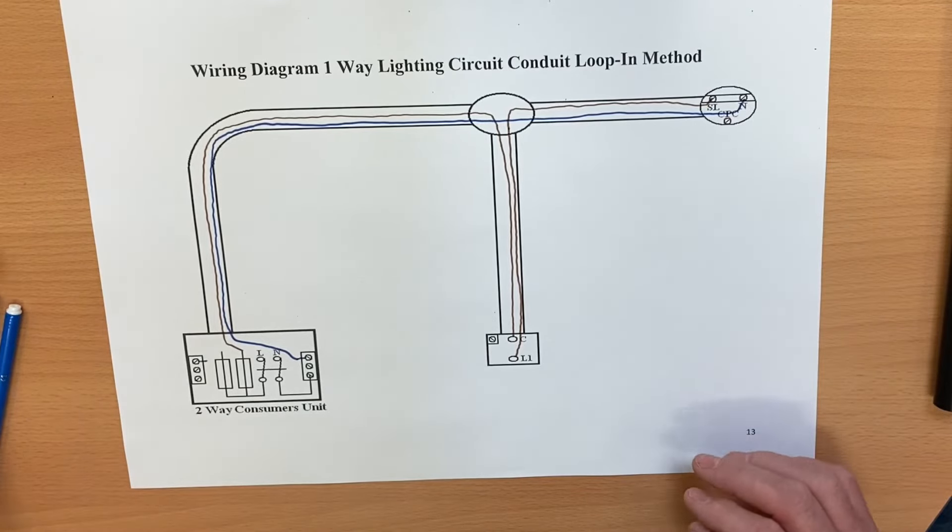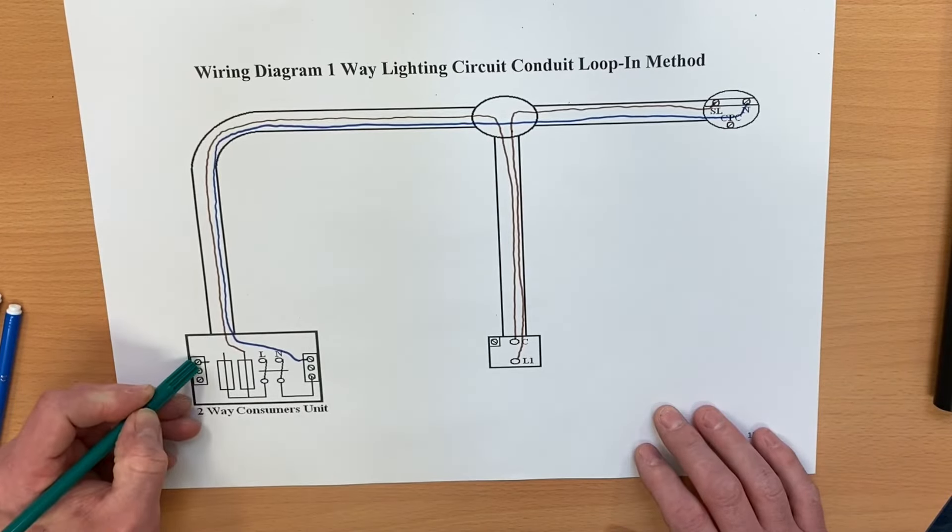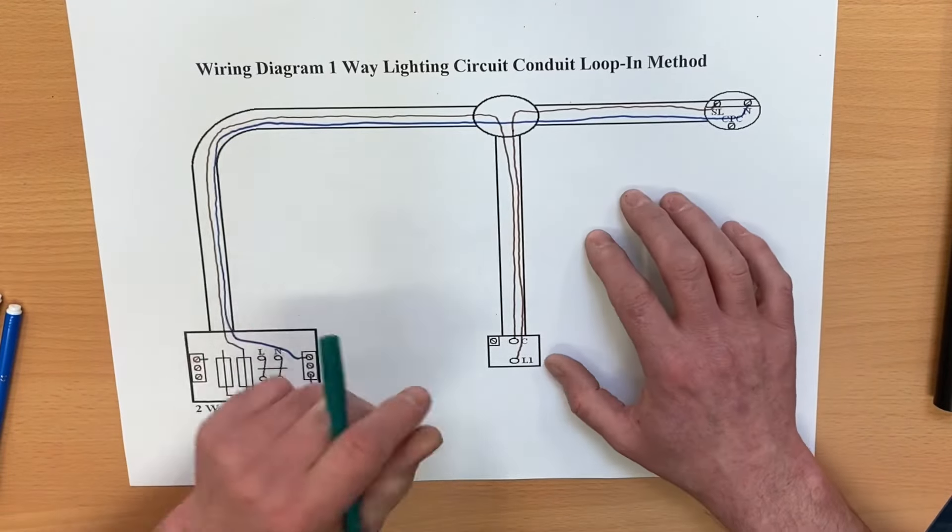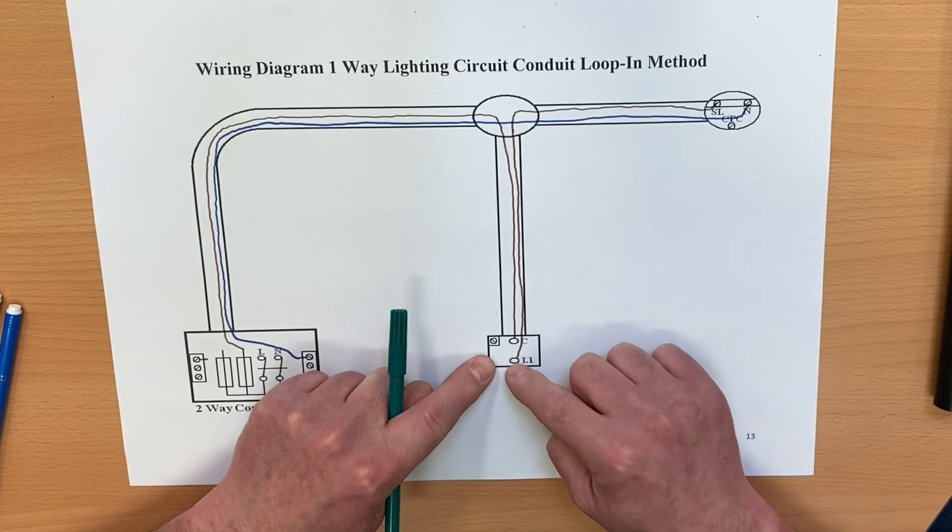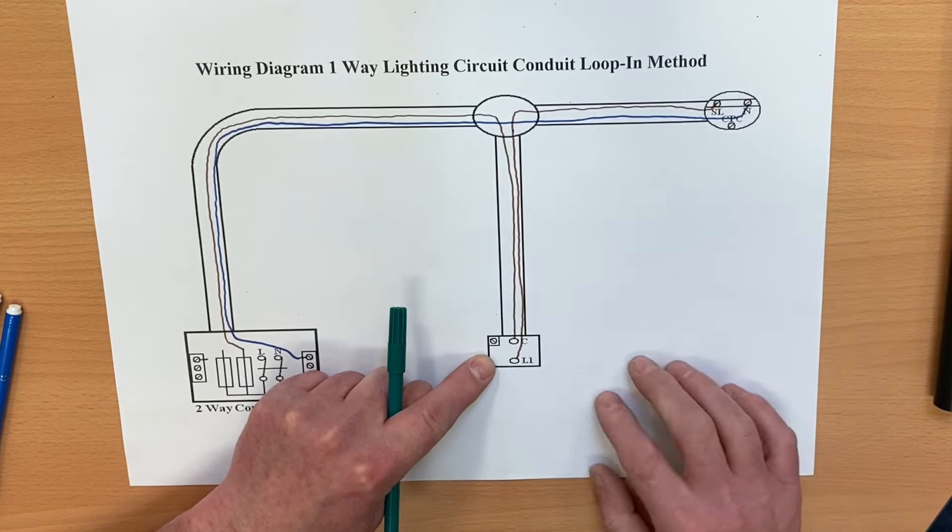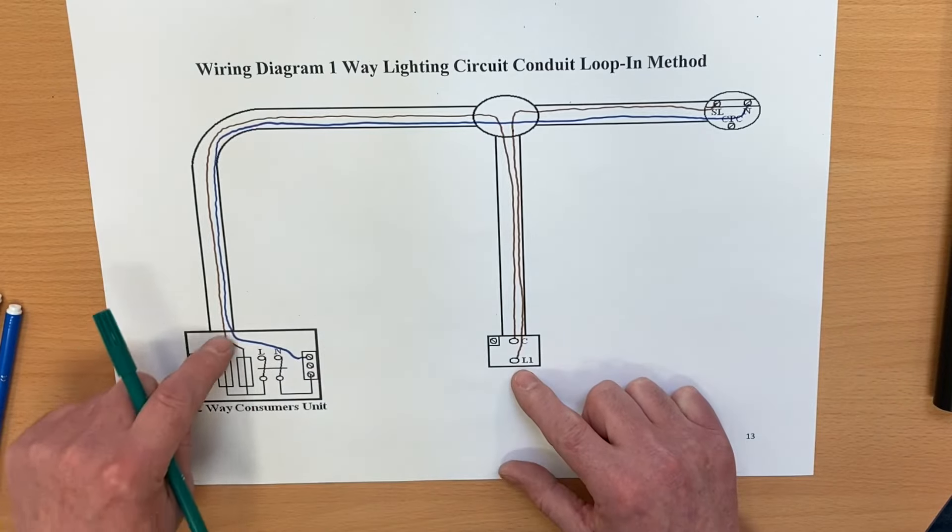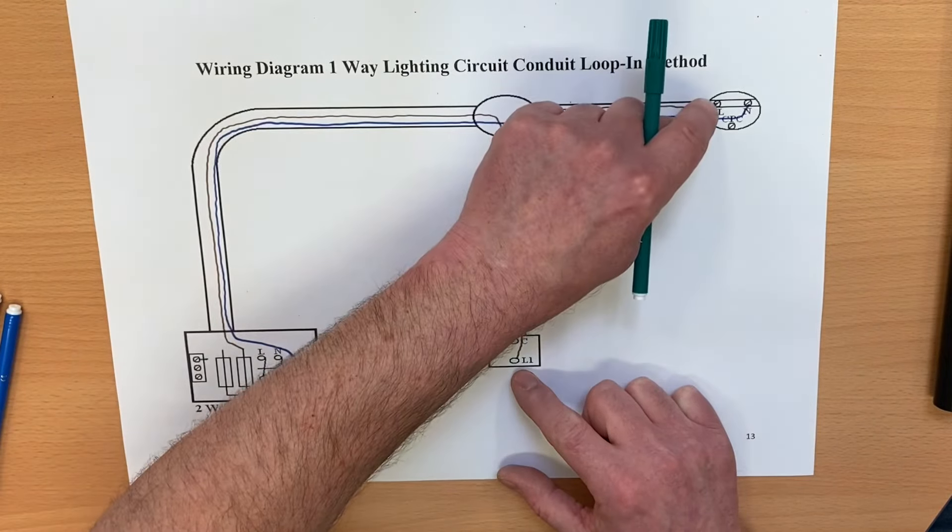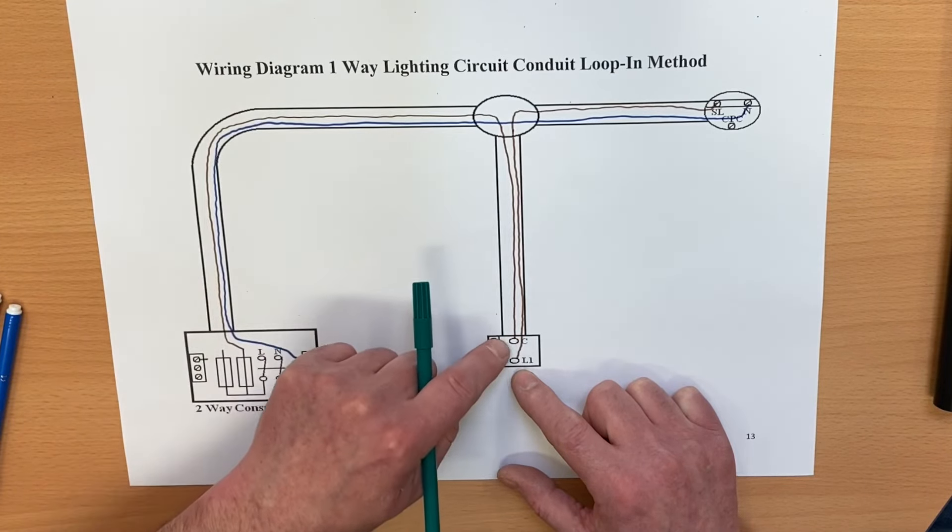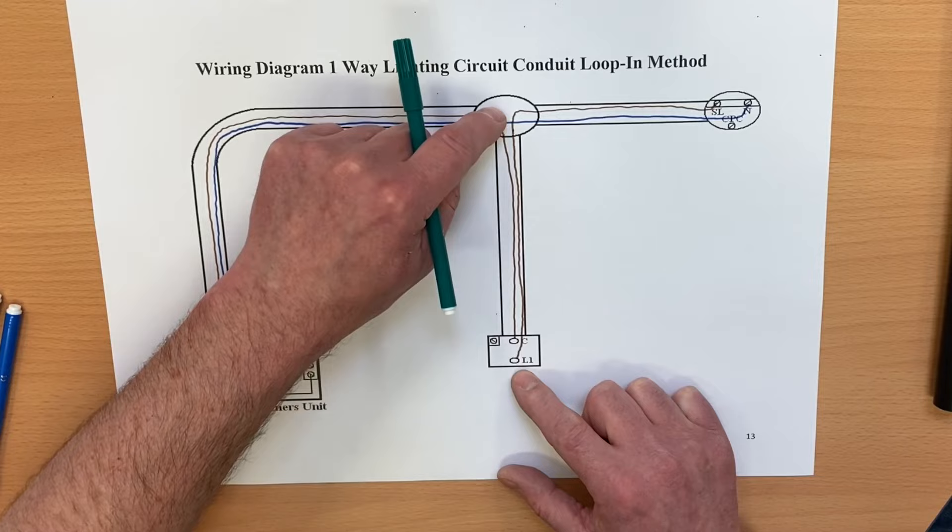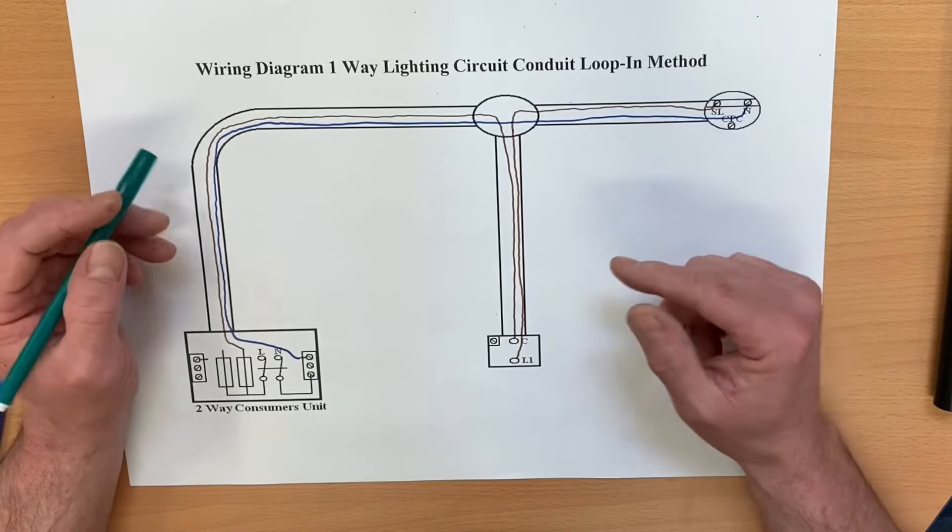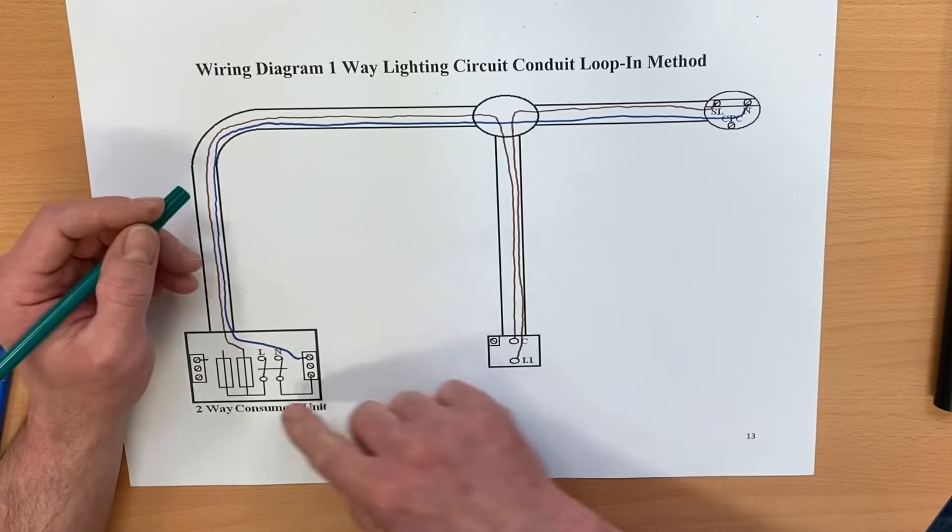Now the CPC. The CPC is going to start in the consumer unit. It'll either go to the switch first and then the light. You're going to have to use your imagination a bit. If this switch drop here was eight meters and that was one meter, which route would you take for the CPC? Well, I'd bring my CPC up to the light point there and then drop it back down there. What I wouldn't do is bring it all the way down here eight meters, all the way back up eight meters, and go across one meter. You can see why with the CPCs it's important that we take a logical route in order that we wire them down and use the minimum amount of cable.